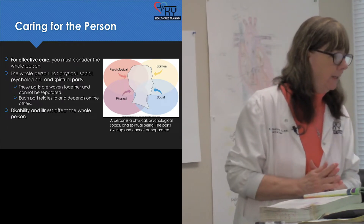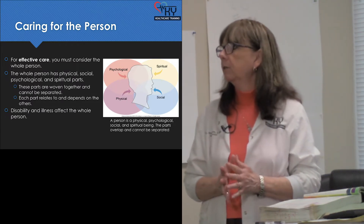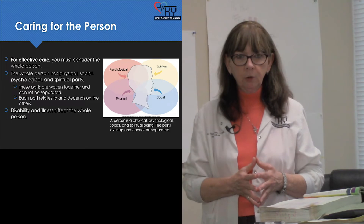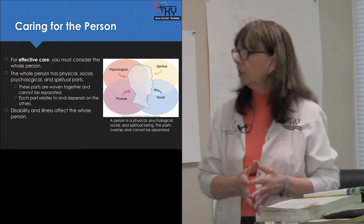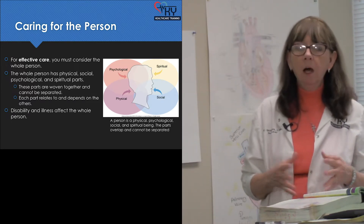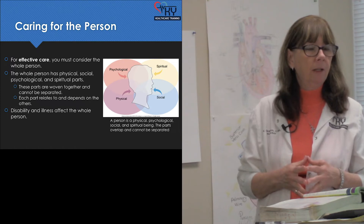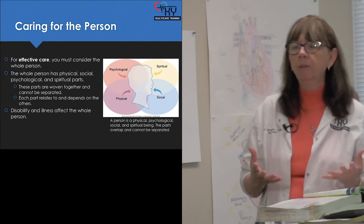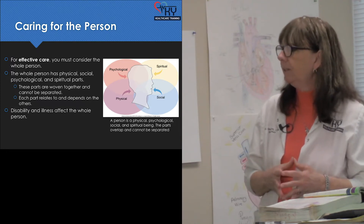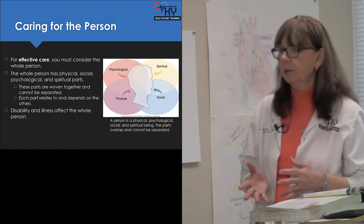Caring for the person. For effective care, you must consider the whole person. The whole person has physical, social, psychological, and spiritual parts. All these parts are interwoven. If there's something wrong with one part, it can affect every system. Every part relates to and depends on the others.